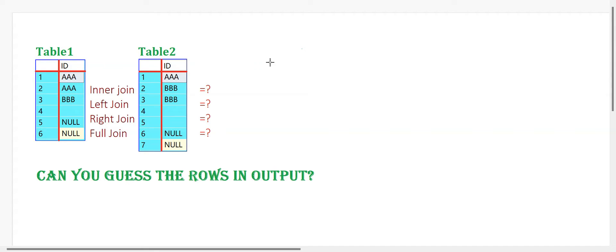Hello, hi guys. Today we can see another interesting SQL problem. Here we have two tables, table 1 and table 2. Table 1 has an id column and table 2 has an id column. Row 1 can have triple A and row 2 can have triple A in table 1. Row 3 can have triple B, and we can have a blank and a null. Table 2 has the same values: triple A and triple B two times, two blanks, and a null. So when you apply a join between these two tables, what will be the output?